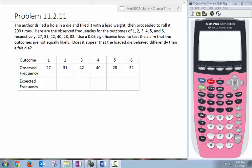This is a problem similar to your homework problem from section 11-2. The author drilled a hole in a die and filled it with lead weight, then proceeded to roll it 200 times.